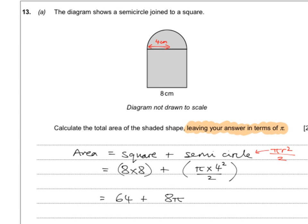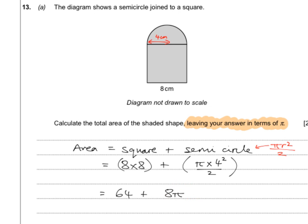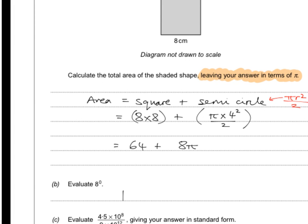Lots of people were going and putting in pi equals 3.14, multiplying it out, adding correctly, but not getting the full two marks because it said leave your answer in terms of pi. So it actually made it even easier. For the bit below: anything to the power of 0 is 1. You must have heard that a million times — 100 to the power of 0 is 1, x to the power of 0 is 1, anything to the power of 0 is 1. That is very important because when it comes up, it's one of the easiest marks on the test.